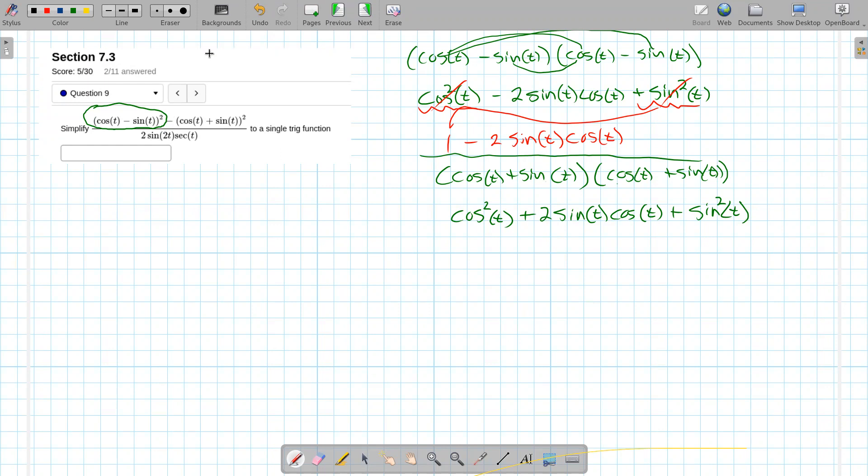And then I'll have a plus sine squared, right? And like before, cosine squared plus sine squared is one. So those two give me a one, and then plus two sine t cosine of t. So that's this one right here.